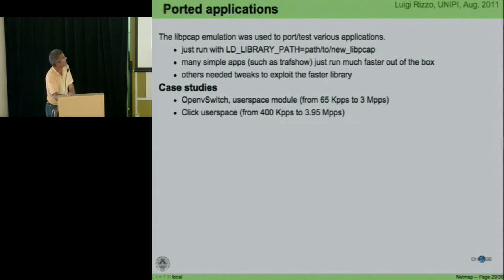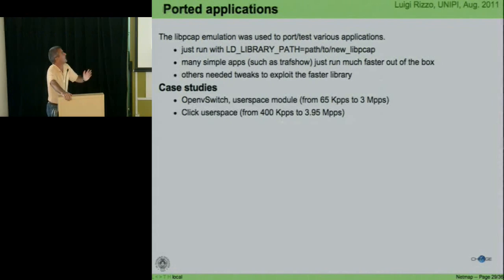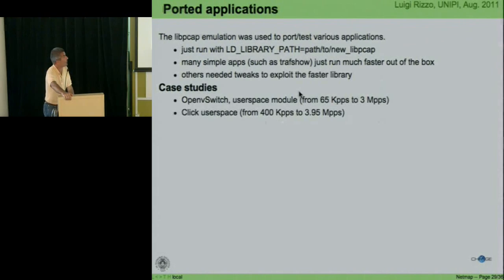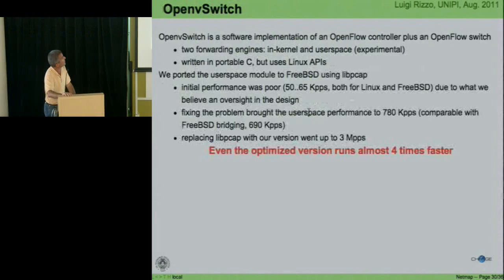On porting applications: if they use libpcap, you just run them on top of the different libpcap. If the application is well-written, it simply goes faster. Open vSwitch, which does packet bridging with a forwarding module in user space, originally did only 65,000–75,000 packets per second. We were able to bring it to 3 million packets per second with some application modifications. Click in user space originally did only 400,000 packets per second on libpcap. With NetMap, we managed nearly 4 million packets per second.